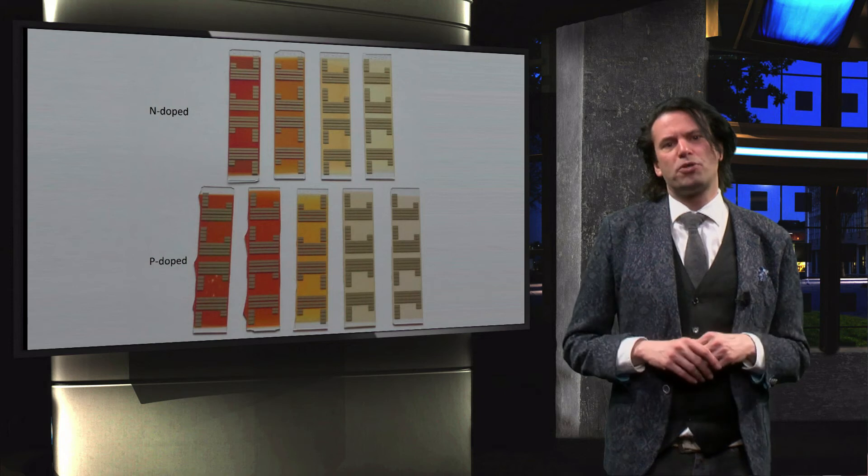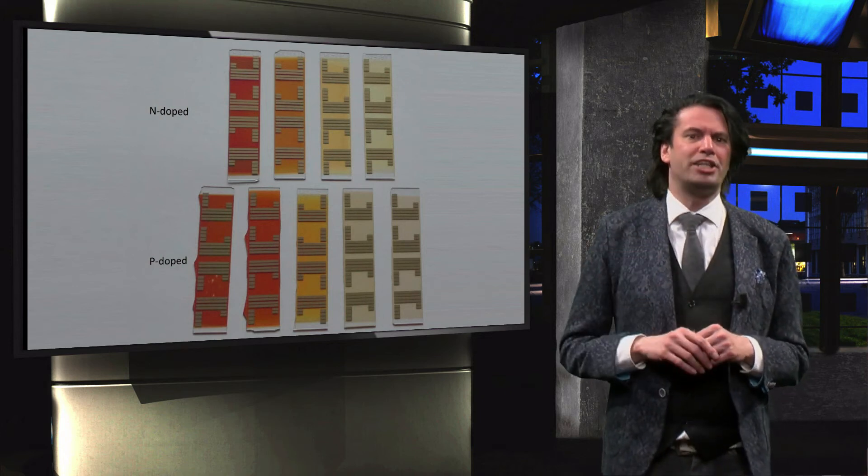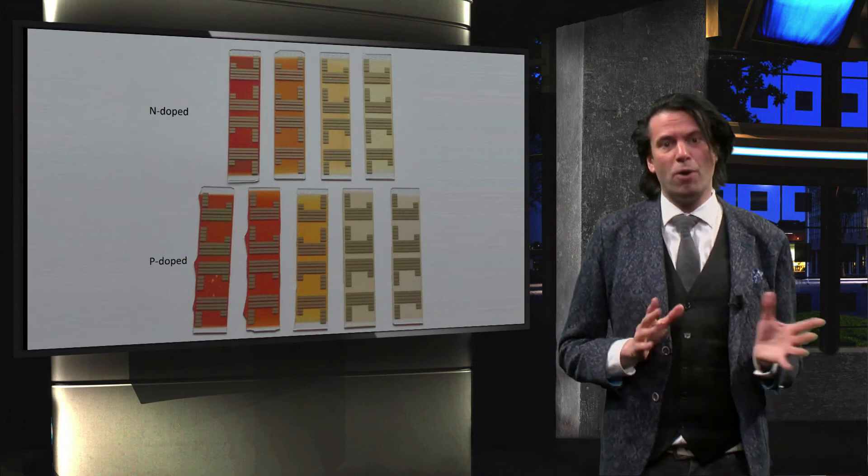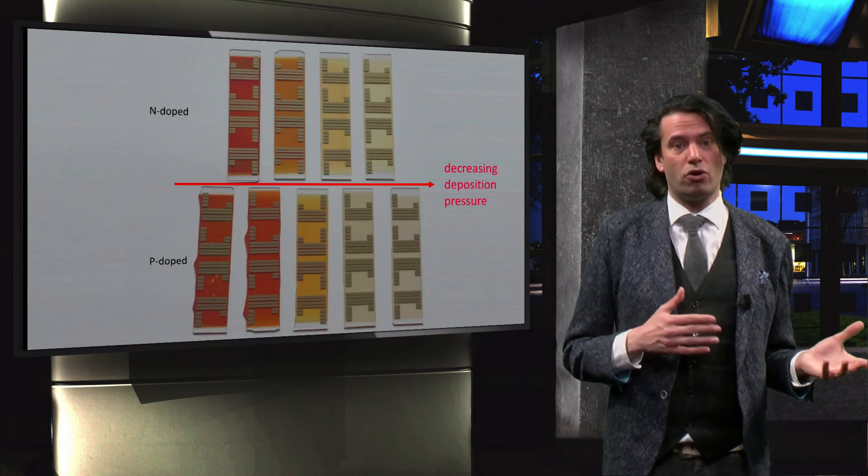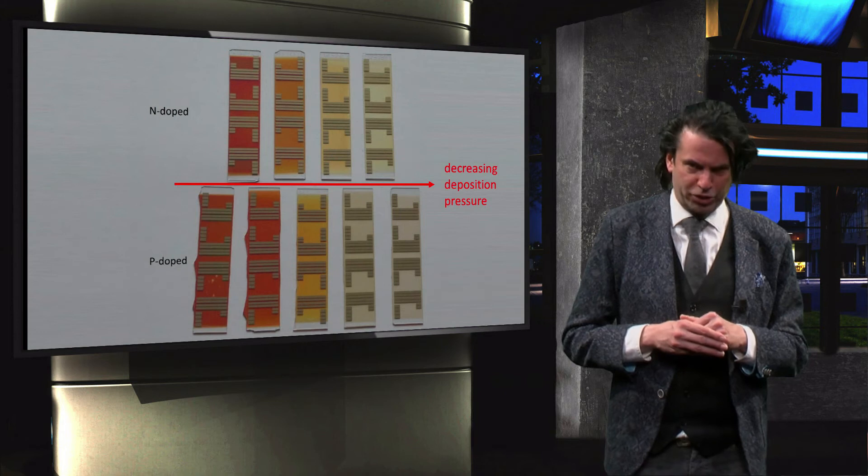This change in the optical properties of the grown silicon oxide materials is even visible to the naked eye, as this picture demonstrates. Both the n-doped and p-doped silicon oxides become visibly more transparent with decreasing deposition pressure.